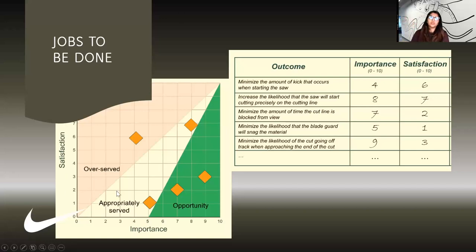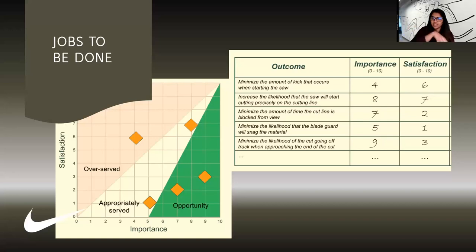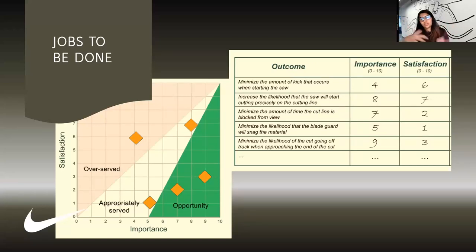This framework helps you see where in the importance scale someone says this is highly important but satisfaction is really low — that's an opportunity. On the other side, if importance is very high but satisfaction is also already high, you need to ask the tough question: why do you want to do it? If satisfaction is already high, this is not going to deliver the highest product value right now. There are better things to do. So among the 25 things, this is an excellent way to prioritize.